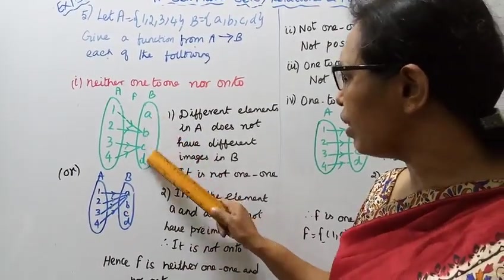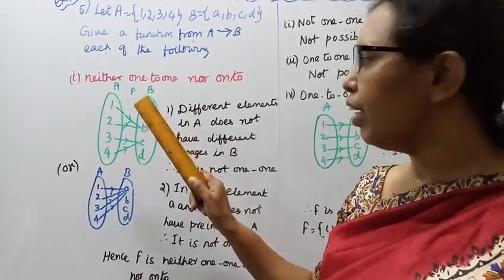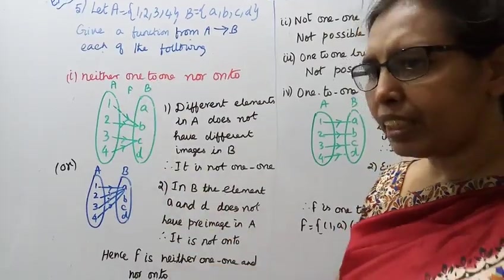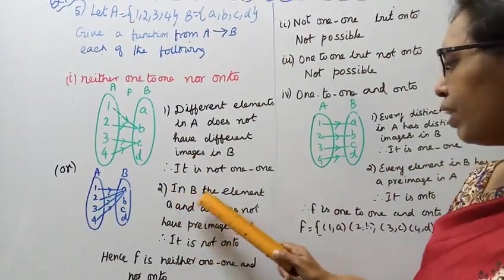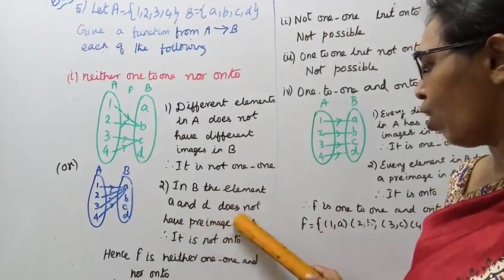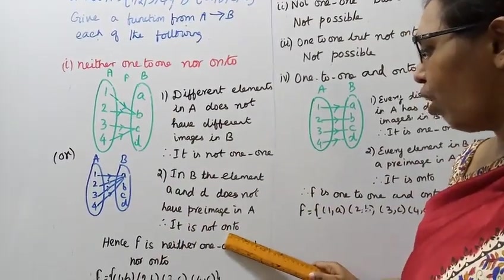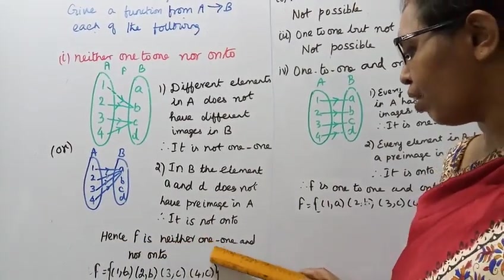Now, A and D don't have a pre-image. In B, the elements A and D do not have pre-image in A. Therefore it is not onto. Hence F is neither one-to-one and not onto.